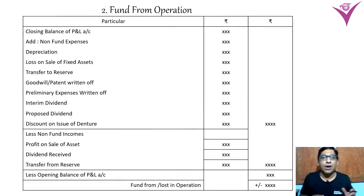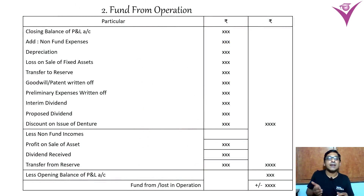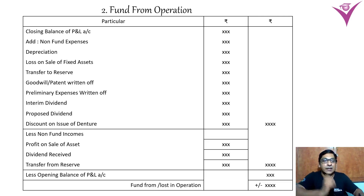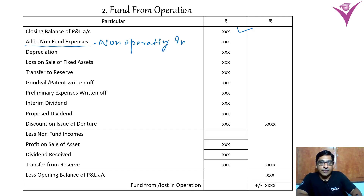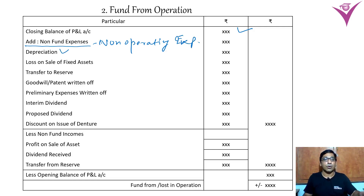Next is fund from operations. Fund from operations has a fixed format. From the balance sheet, we consider all the non-operating expenses and non-operating income.